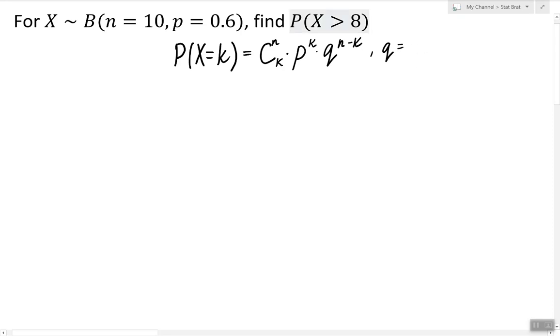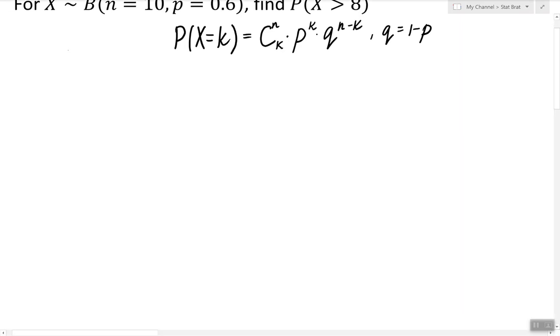Now another important thing to remember is that binomial random variables are discrete random variables, therefore they do have what's called the probability distribution table. In this case, or in any case, the probability distribution table can be constructed by using this formula and it will look something like this.